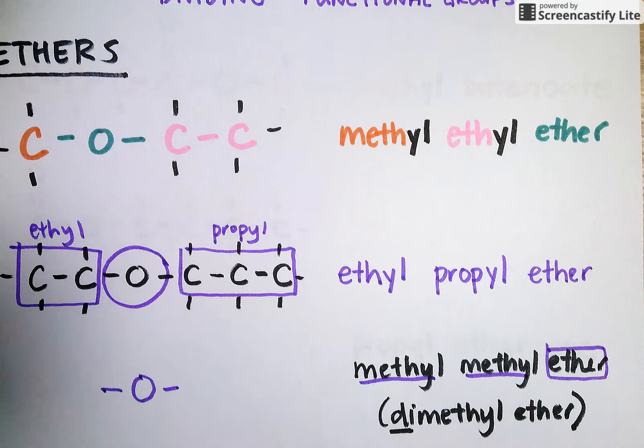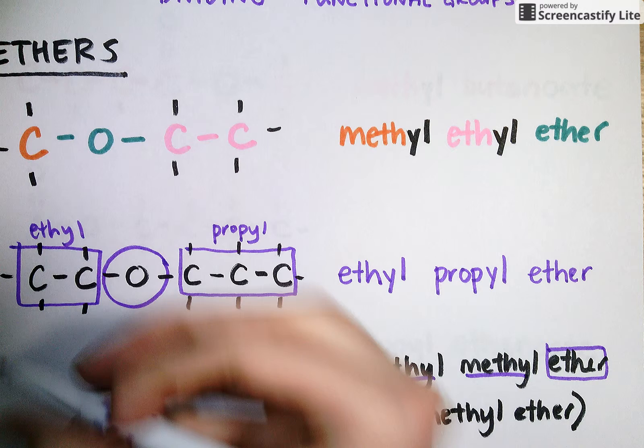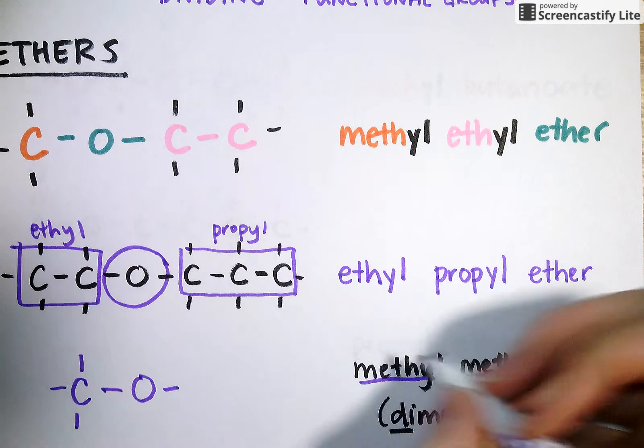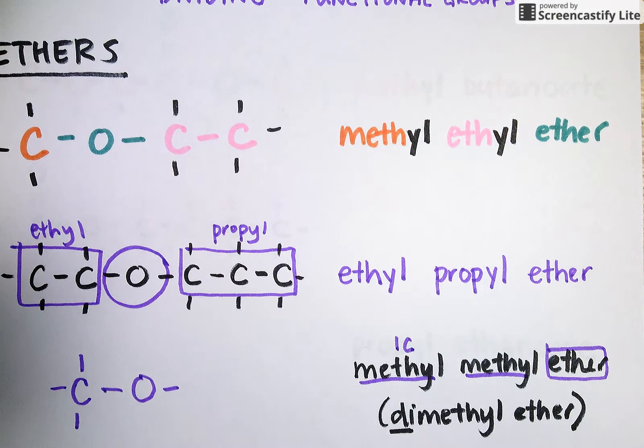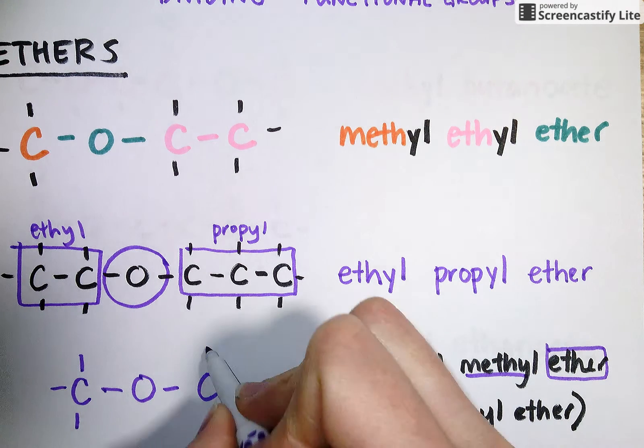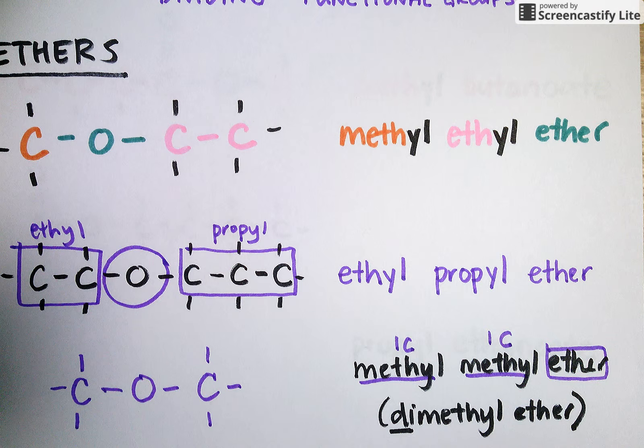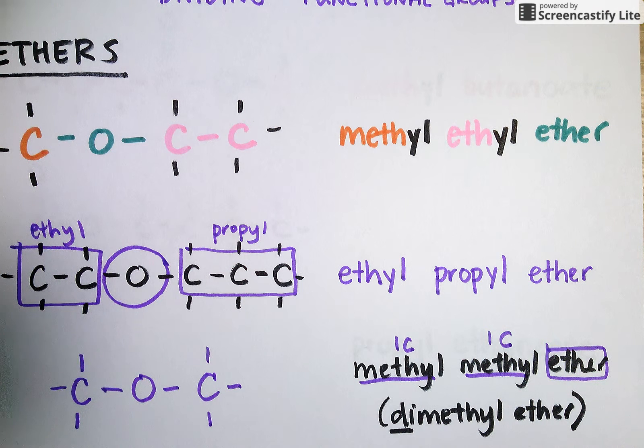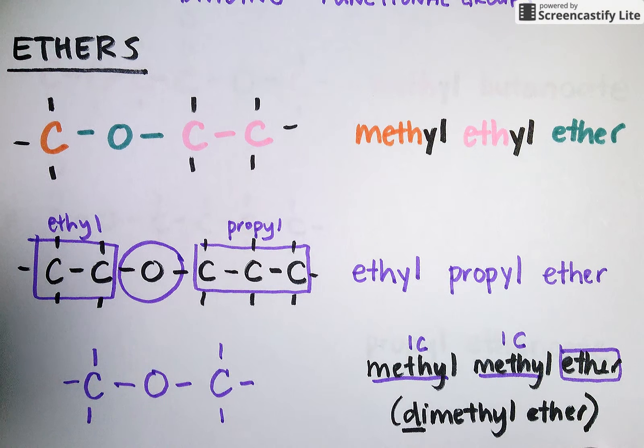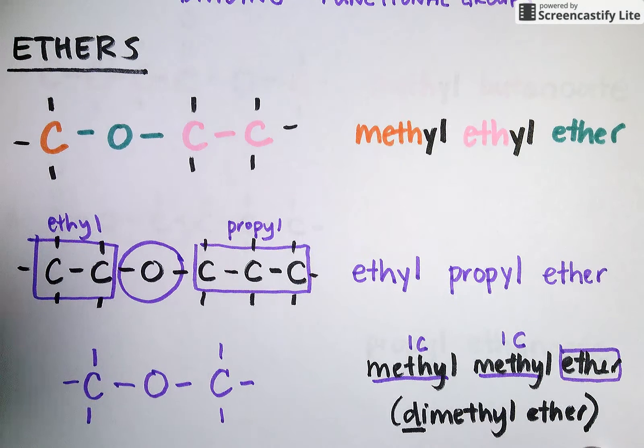I'm going to draw that ether functional group right in the middle. Put my methyl one carbon attachment on the left, put a second methyl attachment on the right. And I've drawn methyl methyl ether or dimethyl ether. So ethers aren't so bad as long as you're naming your two side chains as attachments to the ether functional group.